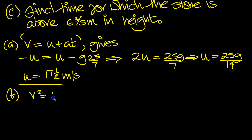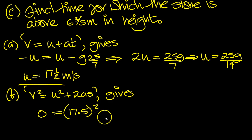The other one is v squared equals u squared plus 2as. We can use this one. Gives, and that will give the height. The final velocity is 0. The initial velocity we now know is 17.5 squared, plus 2a. The acceleration is minus g times s. And s is the height.